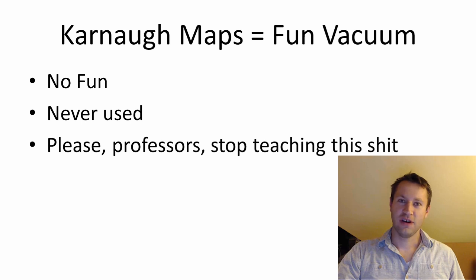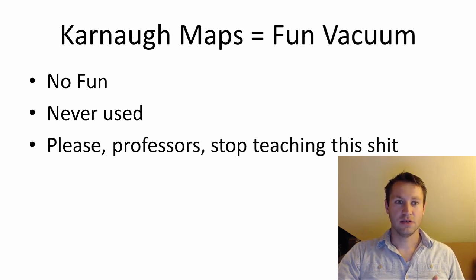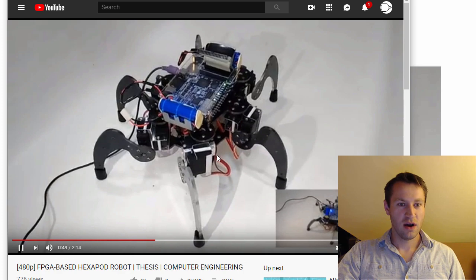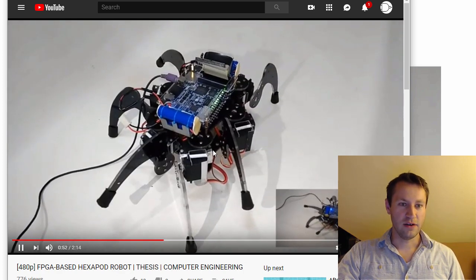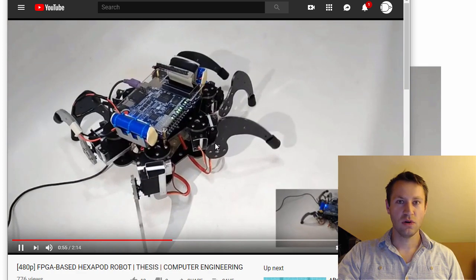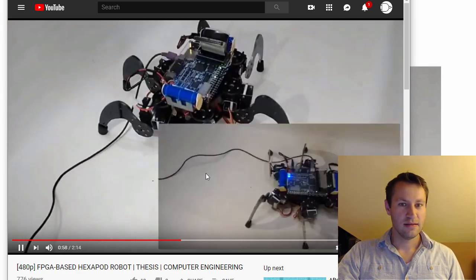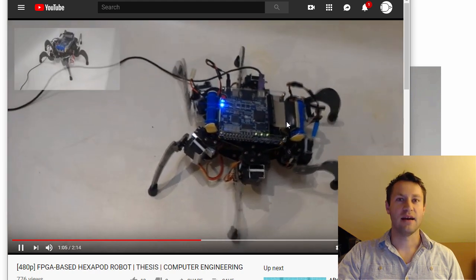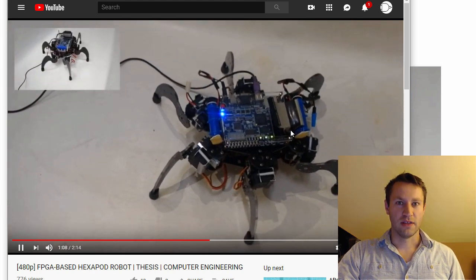If you're a professor in an intro class and you're trying to inspire people, make them excited about engineering, Carnot maps would be the literal last thing I would teach them. Not only is it not useful — and a lot of engineering teaches you things not useful in the real world — but it's boring. It's super boring. Do something interesting. Do a hexapod FPGA robot — that would be way more fun. You get into an intro class and you're just like, 'All right students, welcome to engineering. We've got a hexapod robot, you're going to program this and make it walk around.' That'd be so cool. Professors, if you're watching this, take a note: stop teaching Carnot maps and start teaching hexapod robots, or just anything. How to light up an LED would be 100 times more interesting than Carnot maps.